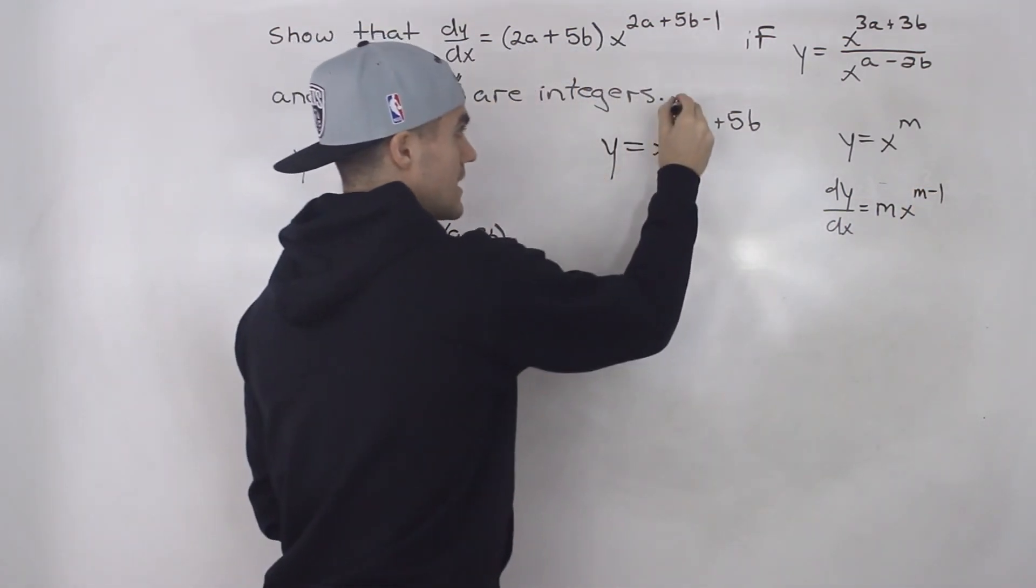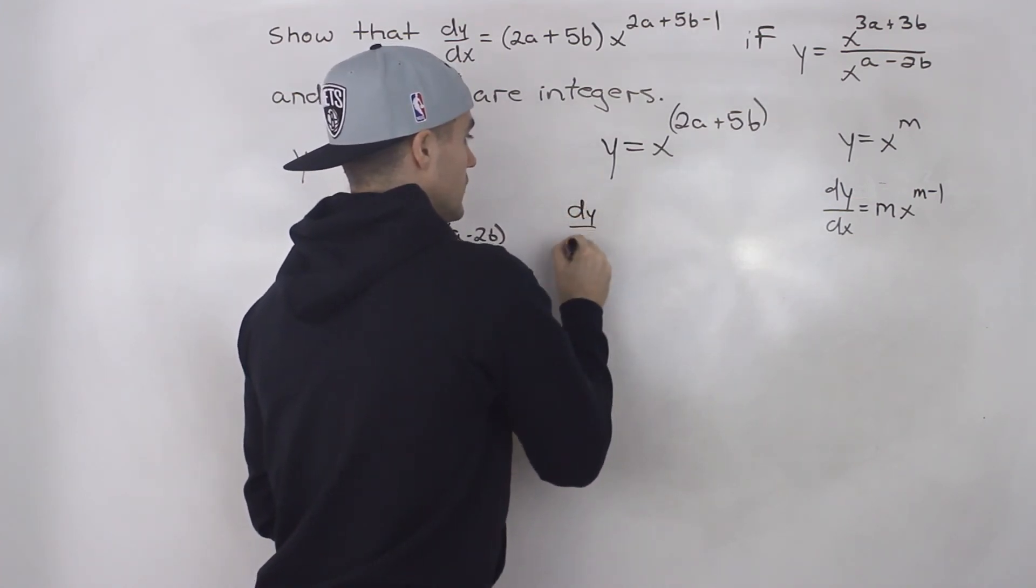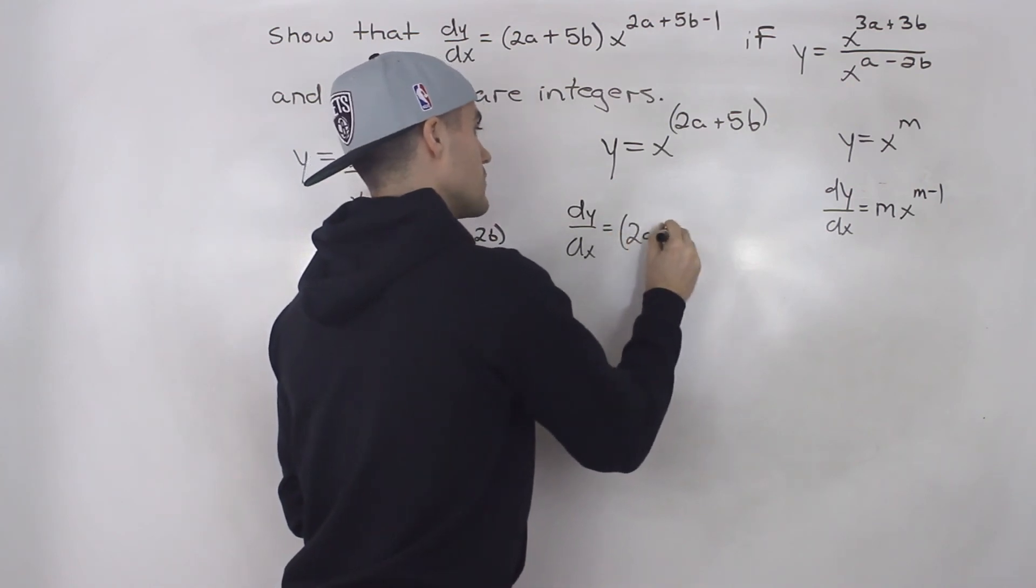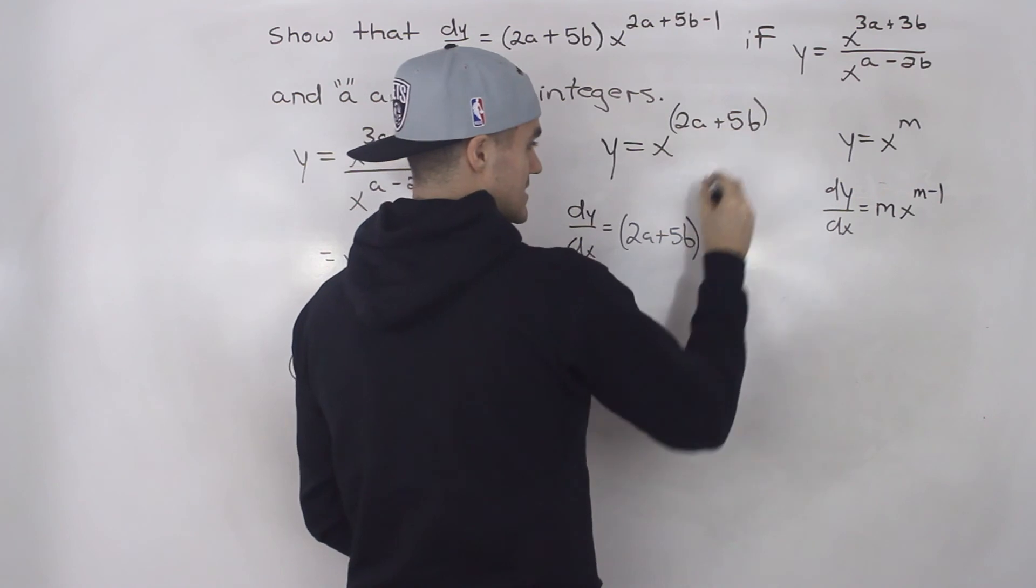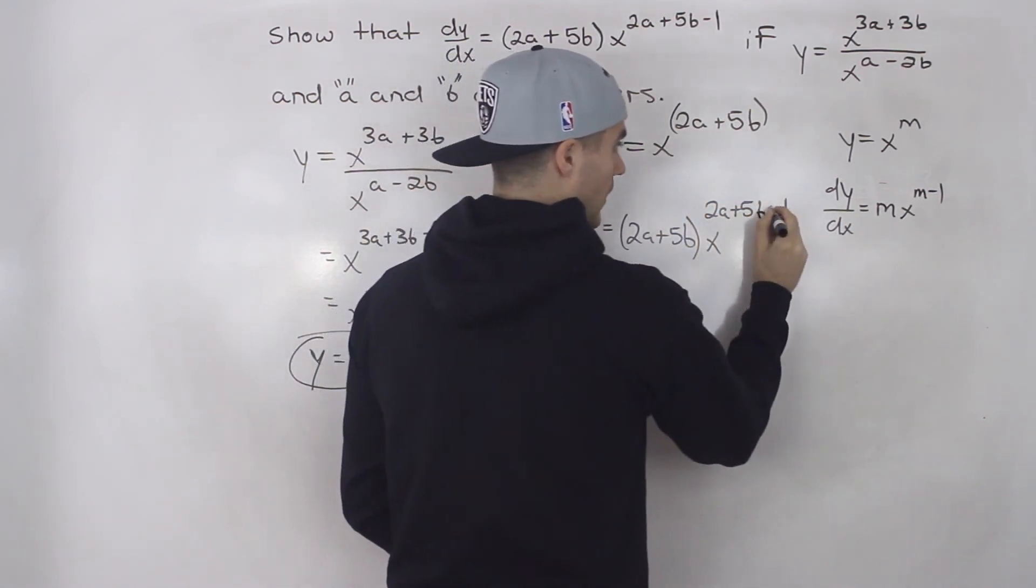Same thing here. We're going to take this whole constant in brackets. When we're finding the derivative, we're going to bring it down: (2a + 5b) multiplied by x^(2a + 5b - 1).